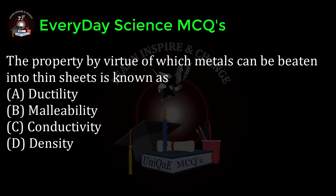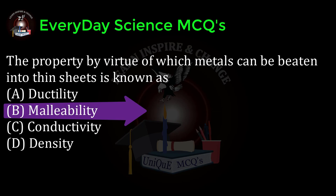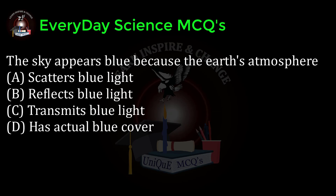The property by virtue of which metals can be beaten into thin sheets is known as: a) ductility, b) malleability, c) conductivity, d) density. Correct answer: b. The sky appears blue because the earth's atmosphere: a) scatters blue light, b) reflects blue light, c) transmits blue light, d) has actual blue cover.